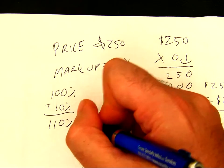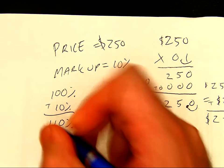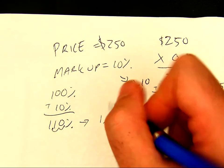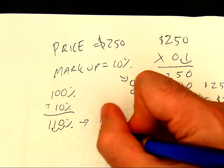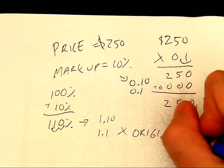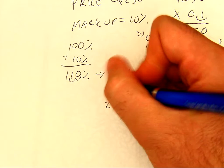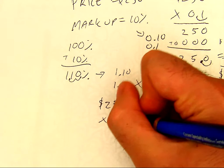So I take this, I convert it to a decimal. This will be 1.10 because I move it over two places. It will be 1.10 or just 1.1. Now, I can multiply it times my original. So I'll have $250 times 1.1.